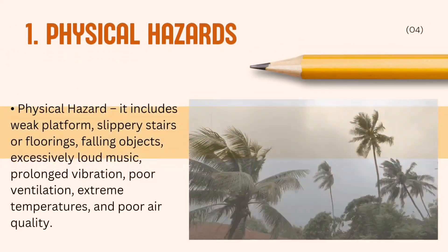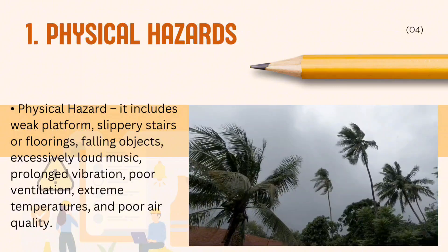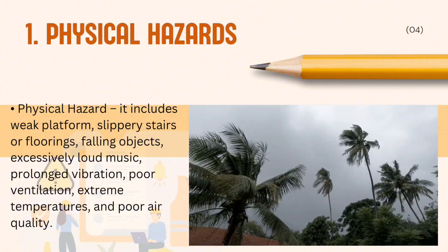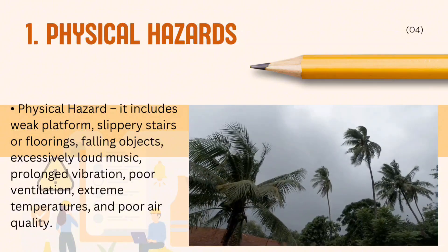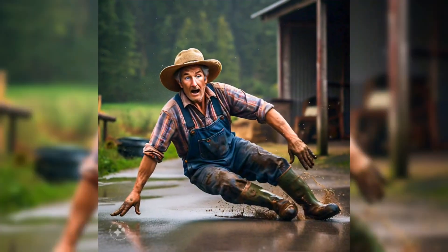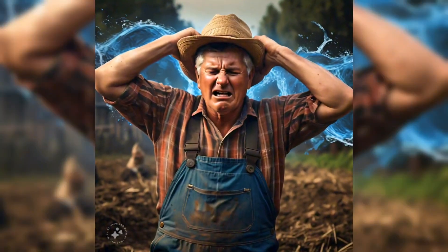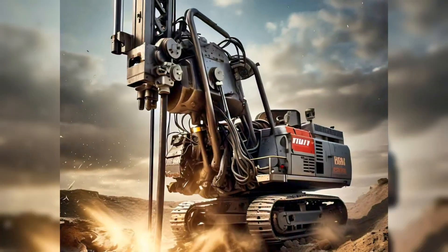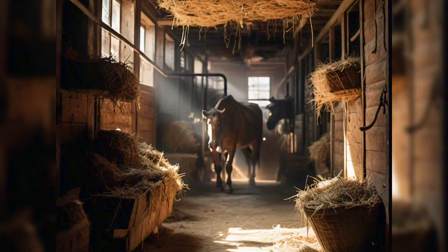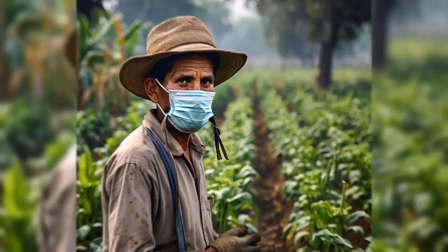The following are the types of hazards. 1. Physical hazard. It includes weak platform, slippery stairs or floorings, falling objects, excessively loud music, prolonged vibration, poor ventilation, extreme temperatures, and poor air quality.